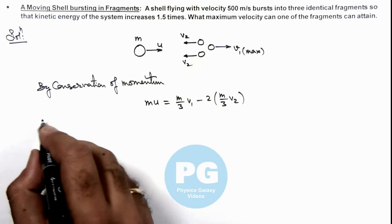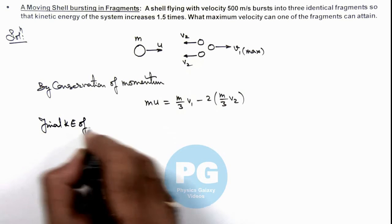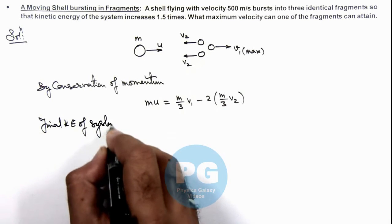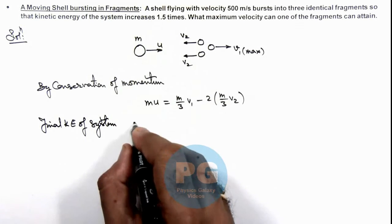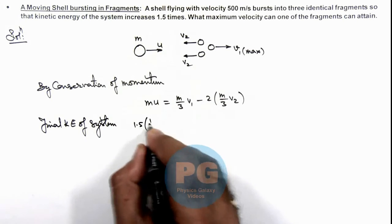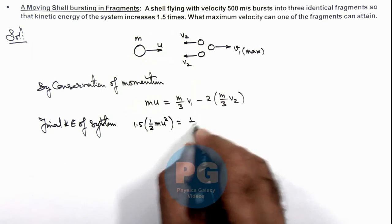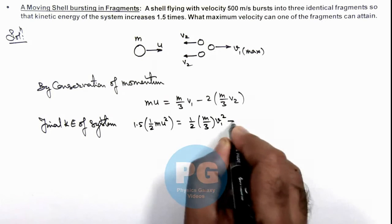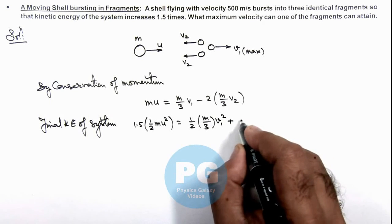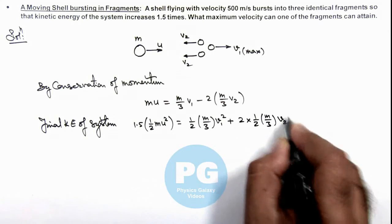And we are also given the final kinetic energy of system to be 1.5 times the initial one. So it is 1.5 times ½mu² equal to ½·m/3·v₁² plus twice of ½·m/3·v₂².